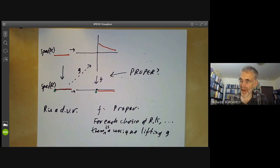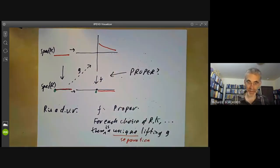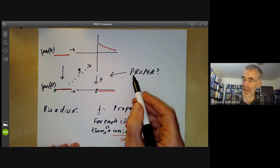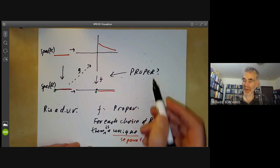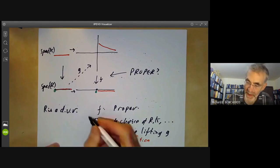So there is a unique lifting G. Uniqueness of the lifting is just the separation of this map F. And the existence is closely related to this condition that the map should be proper.